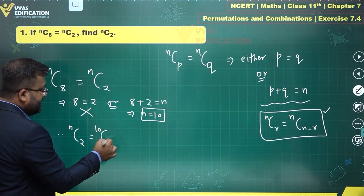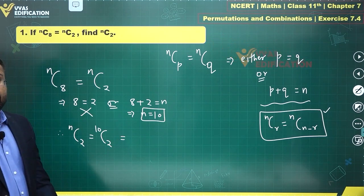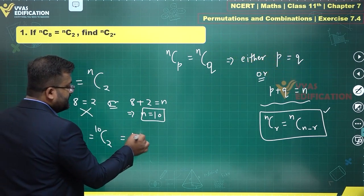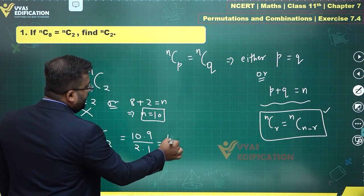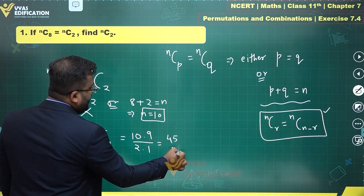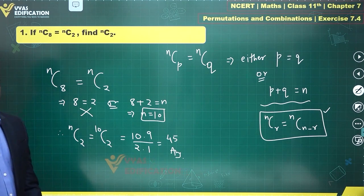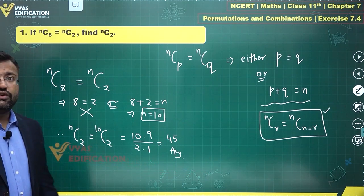What's the value of 10C2? This is 10 times 9 over 2 times 1, which is 45. That is the answer for this question.